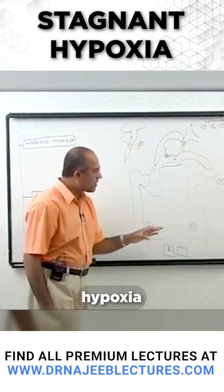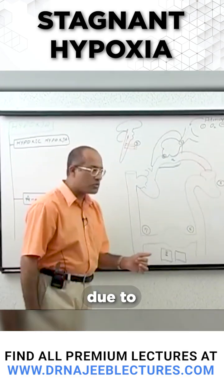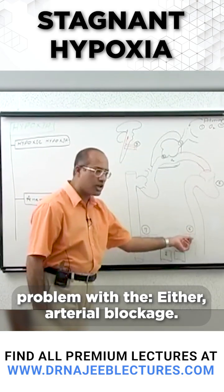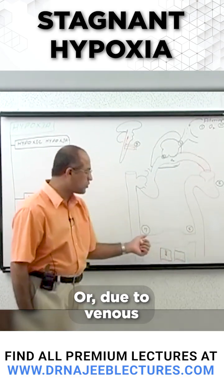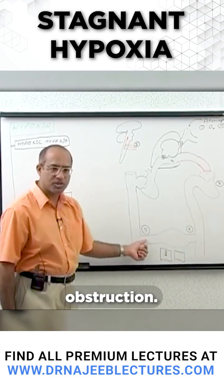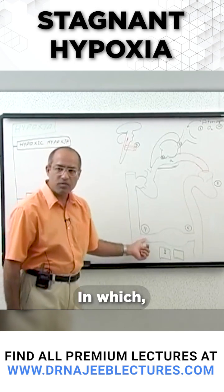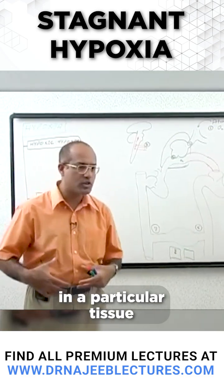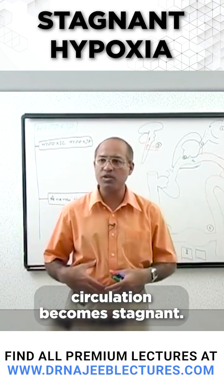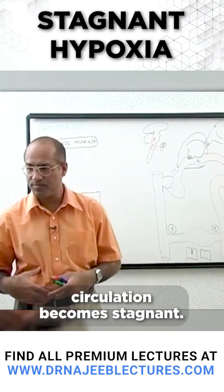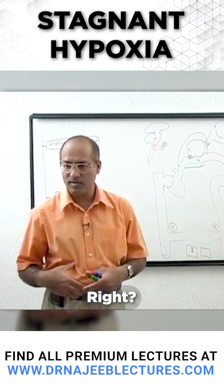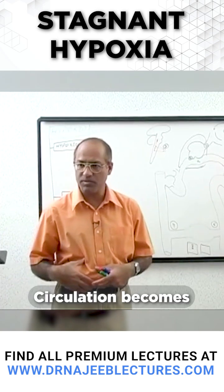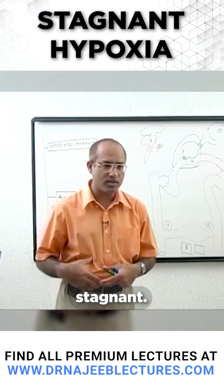There can be hypoxia due to problems with either arterial blockage or venous obstruction, in which circulation in a particular tissue becomes stagnant.